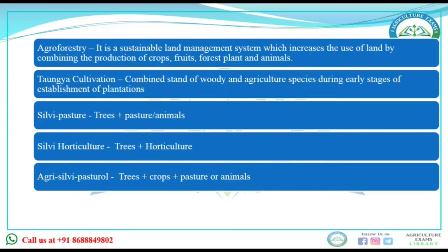First is agroforestry. What is agroforestry? It is simply a land management system in which we increase the use of land by the combined production of roots, crops, forests, animals — everything. Along with agriculture activity, we also do the production of forest. That is agroforestry.